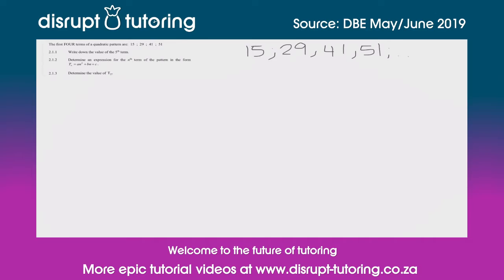Now we find our first differences. The first difference is 14 — that's 29 minus 15. Then 41 minus 29 gives us 12, and 51 minus 41 gives us 10.